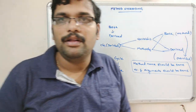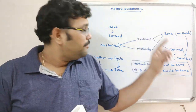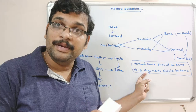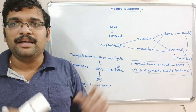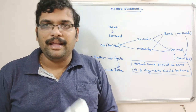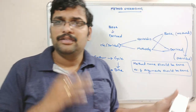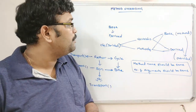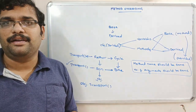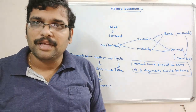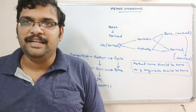Hope you understood this simple logic of method overriding. We have to remember that the method name, number of arguments, and type of arguments should be the same — then only we can say the method is overridden by the derived class. I will demonstrate this method overriding with an example so your doubts will be clarified. Let us move on to the system.